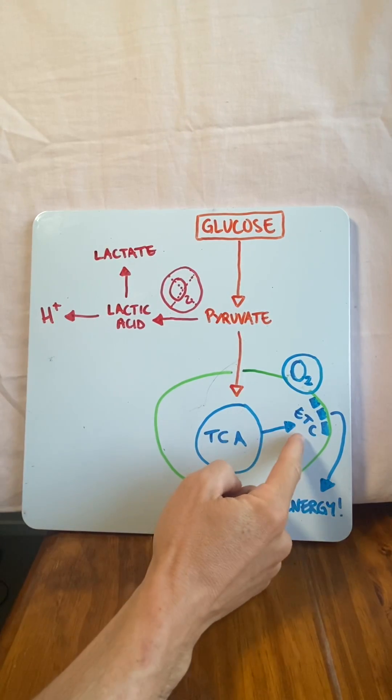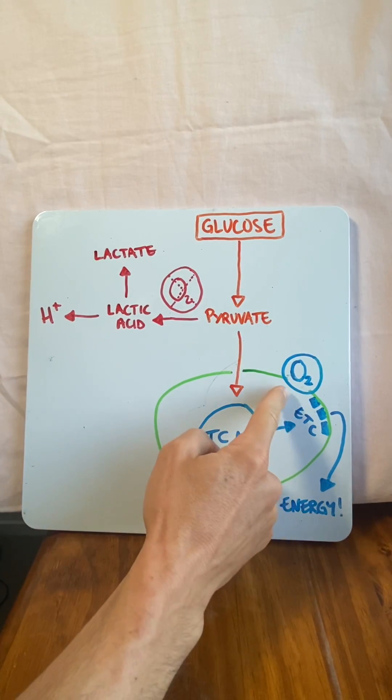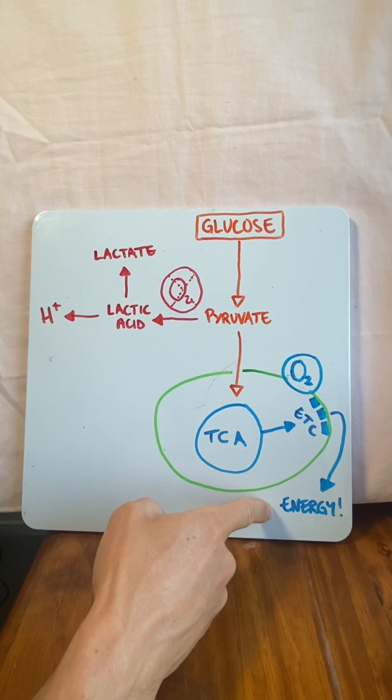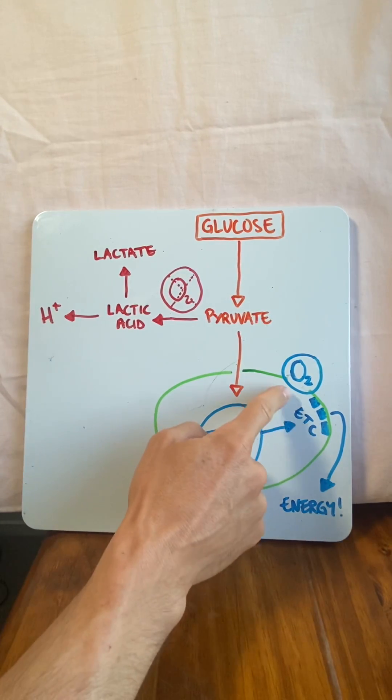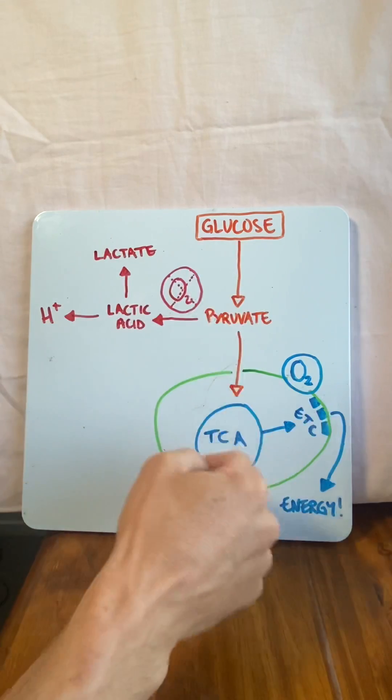Its products jump over to the electron transport chain, and with oxygen we produce a whole bunch of energy - around about 36 ATP molecules, which is really good. And because we're using oxygen, it's called the aerobic pathway.